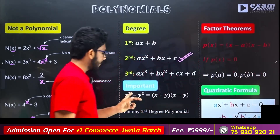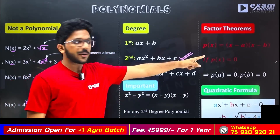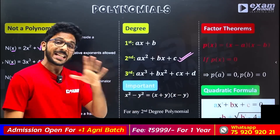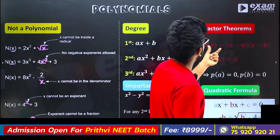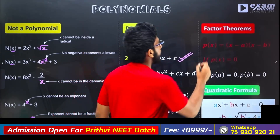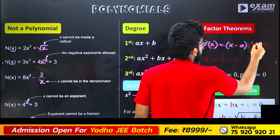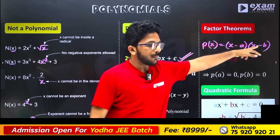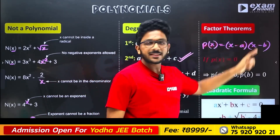The important identity is x² minus y². This is why you will be asked the first type of question. That question is: x² minus y² equals x plus y into x minus y. What is important? P of x is equal to x minus a into x minus b. This is factors — if you take this, you will see the factors.